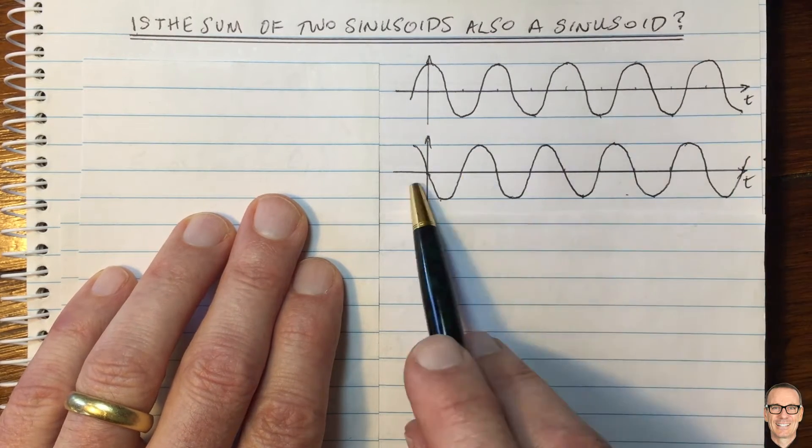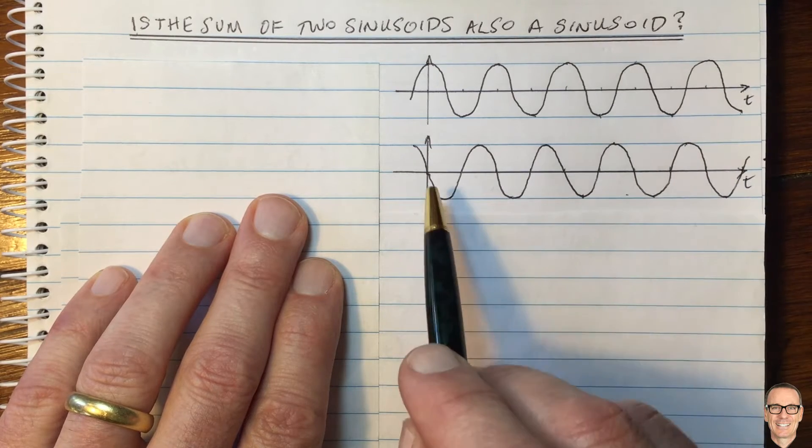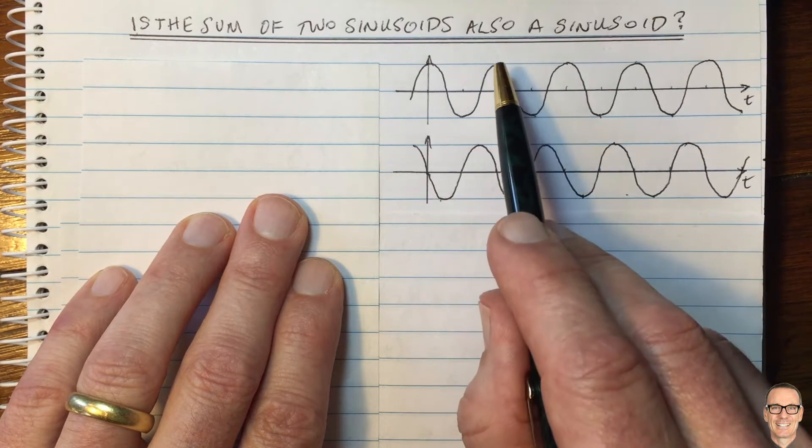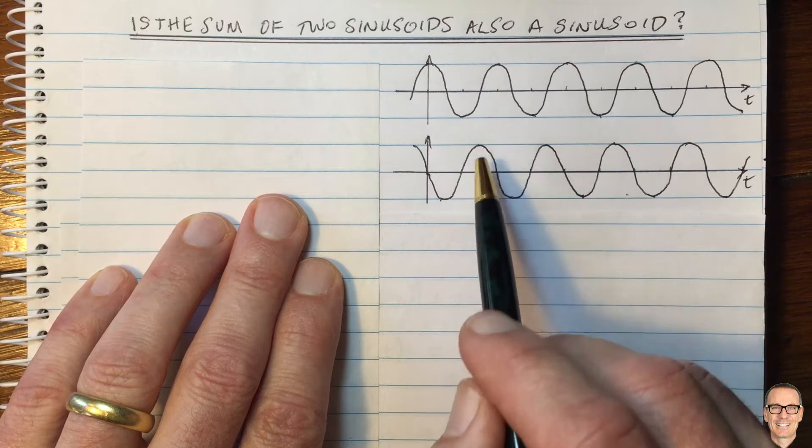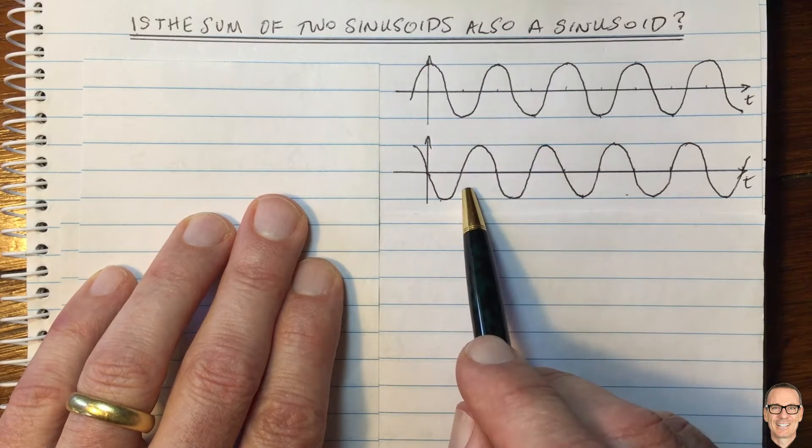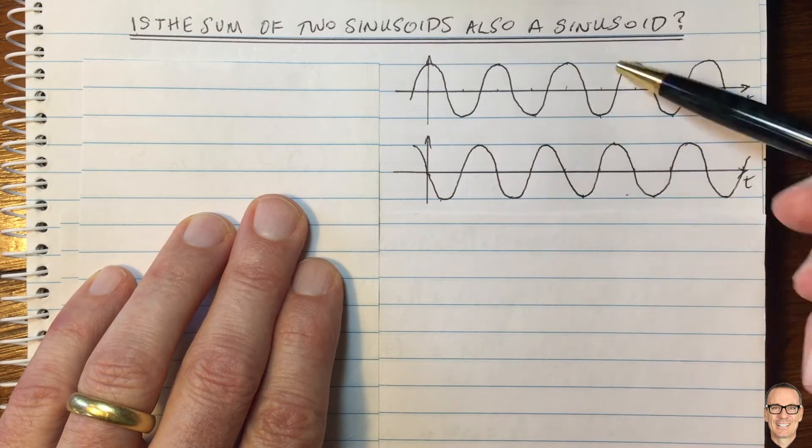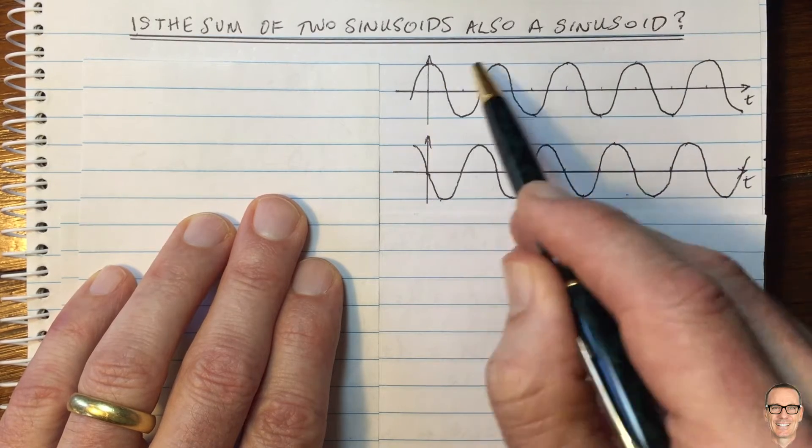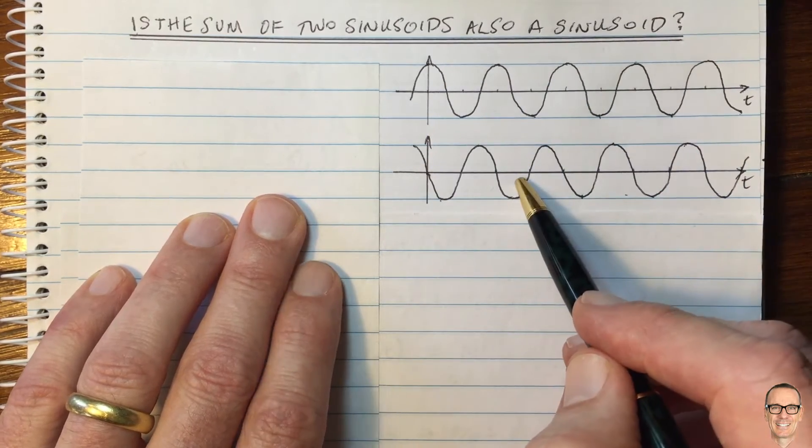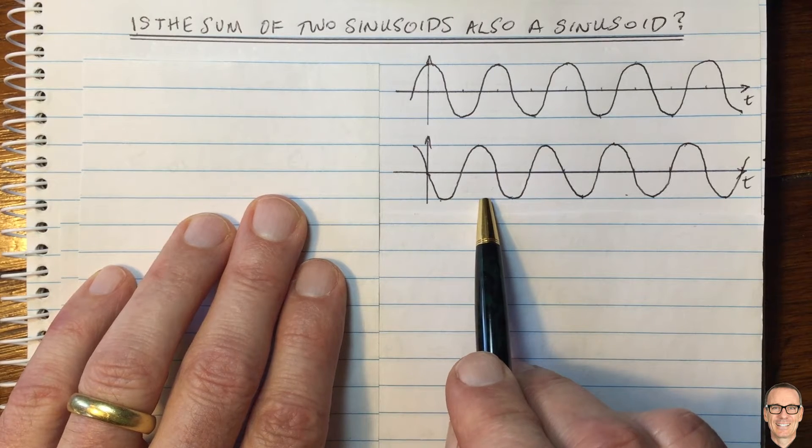So here I've drawn two sinusoids with different phases. And if we add these together, and if you can think in your mind's eye about adding these together, of course you add them for every value of t, so adding these together, can you picture that overall the answer will also be a sinusoid?